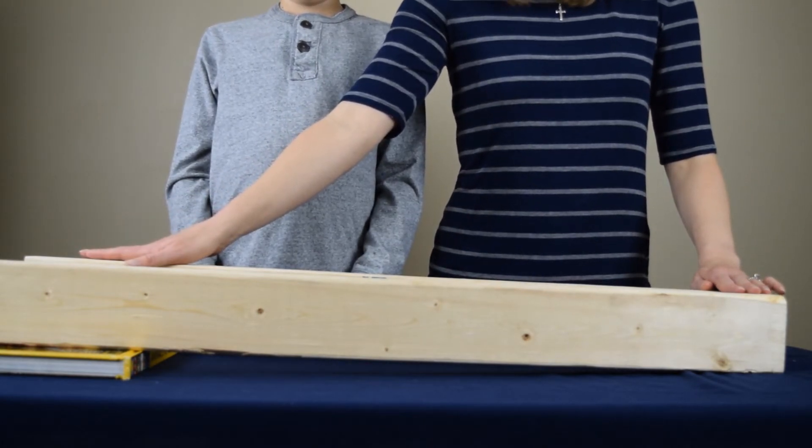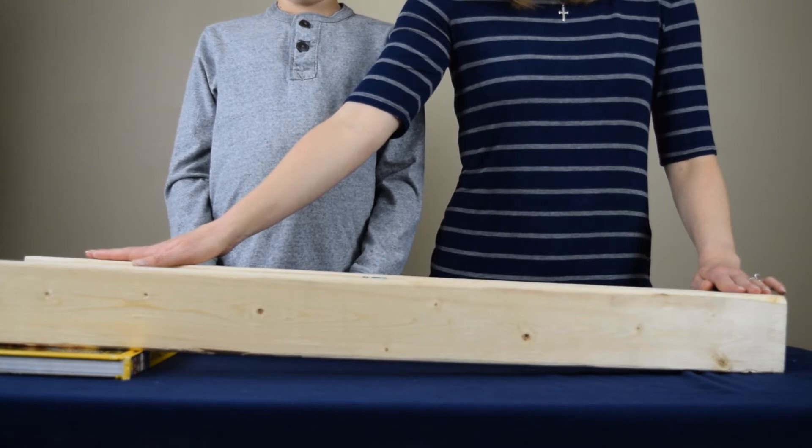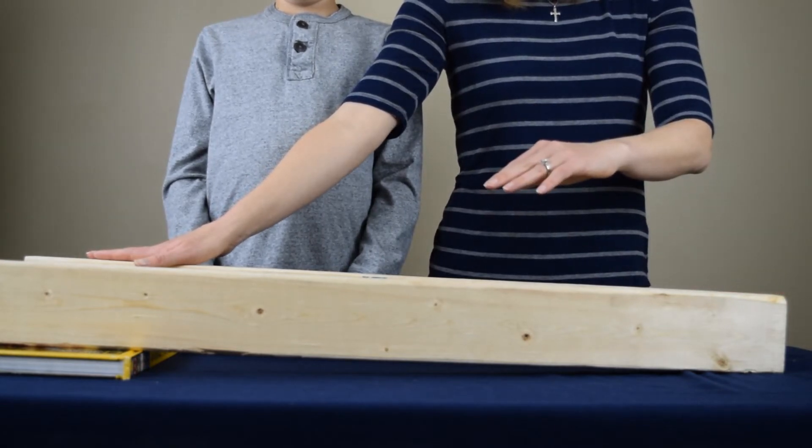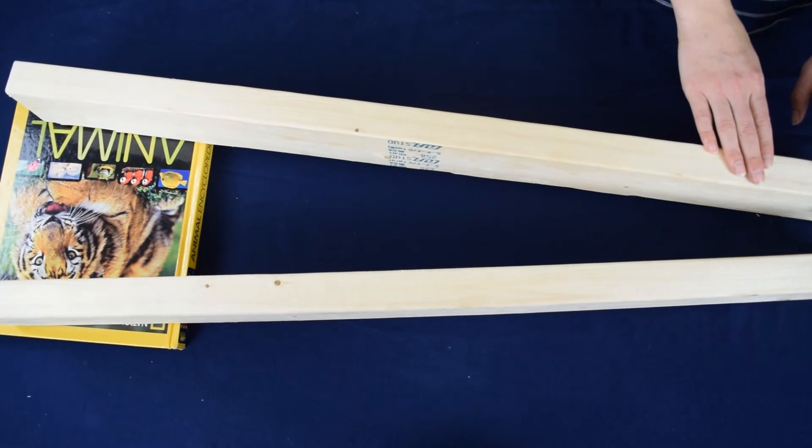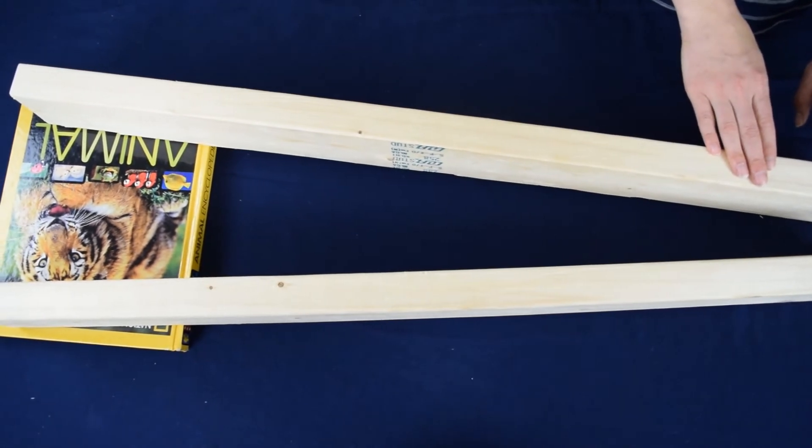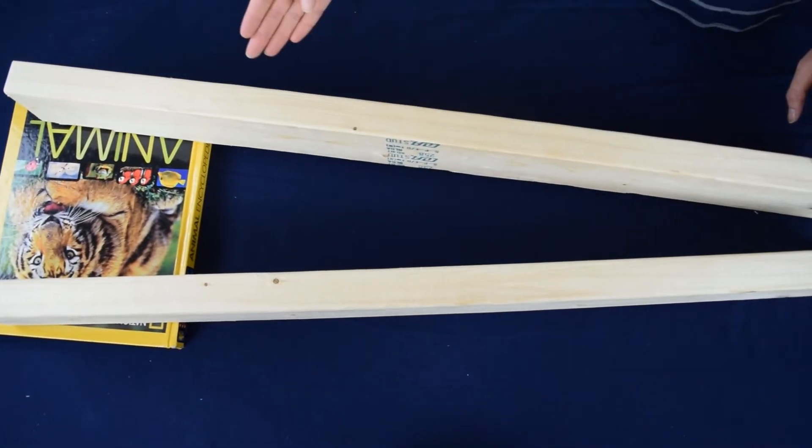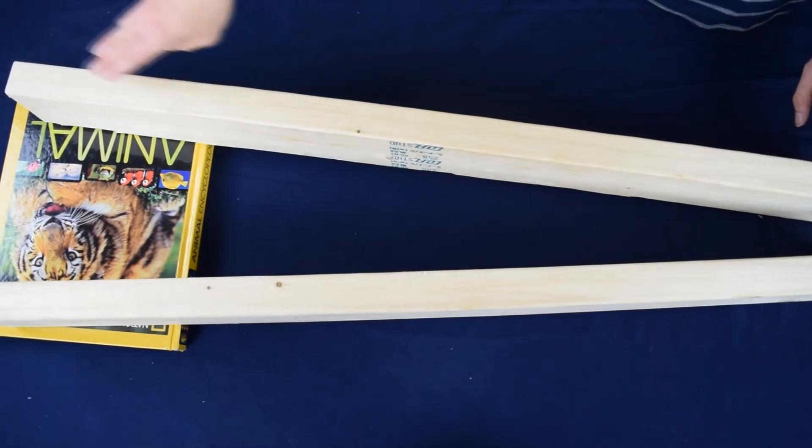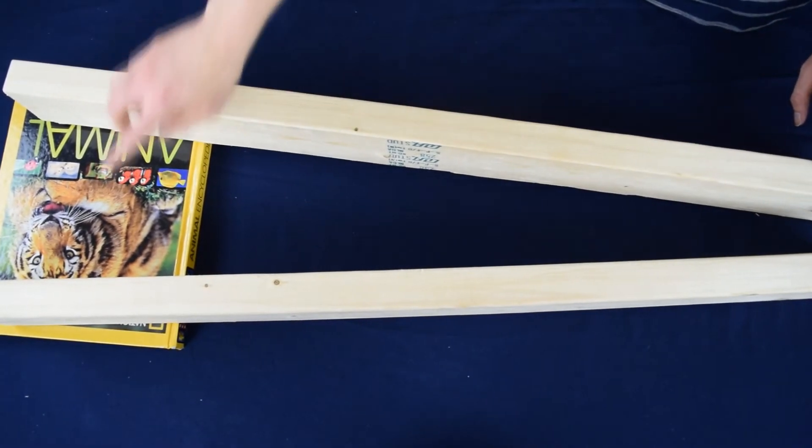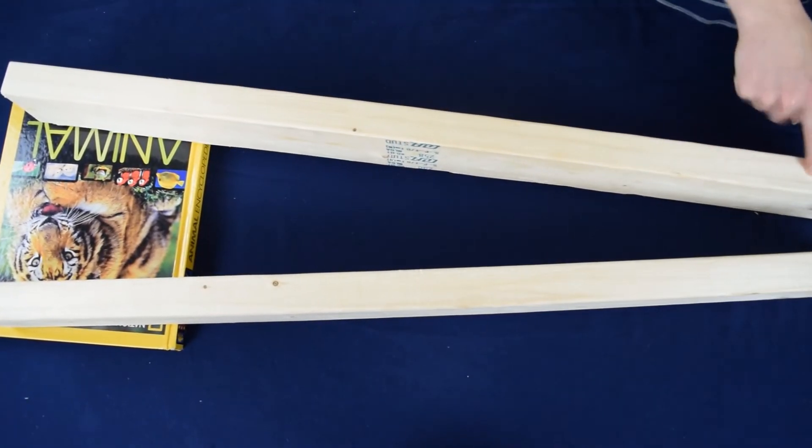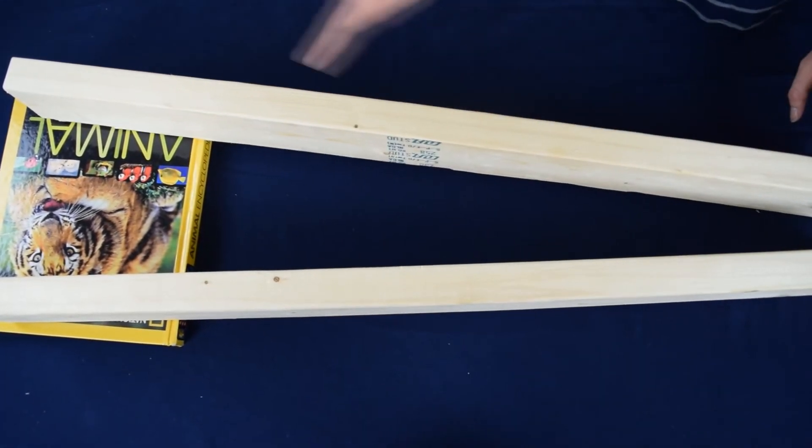So now I'm going to show you what it looks like from a top view. Now that you're looking at the boards from the top view, you can clearly see the V position that we created. The side of the boards that are resting on the book are wider than the side of the boards that are resting on the table and that makes our V shape.